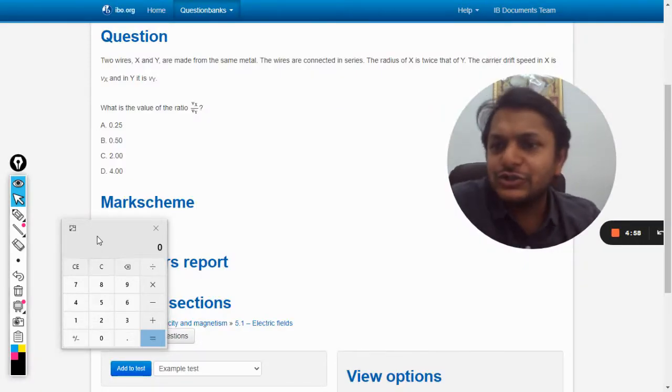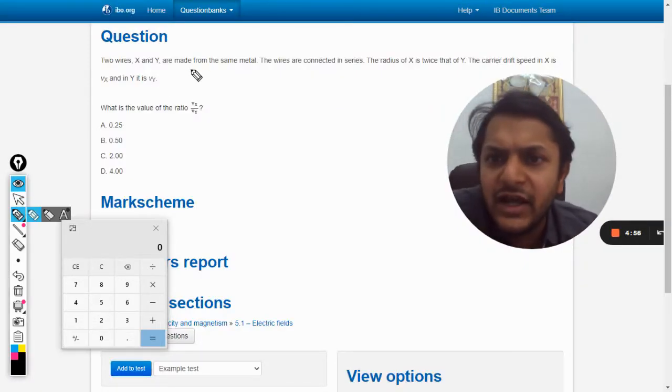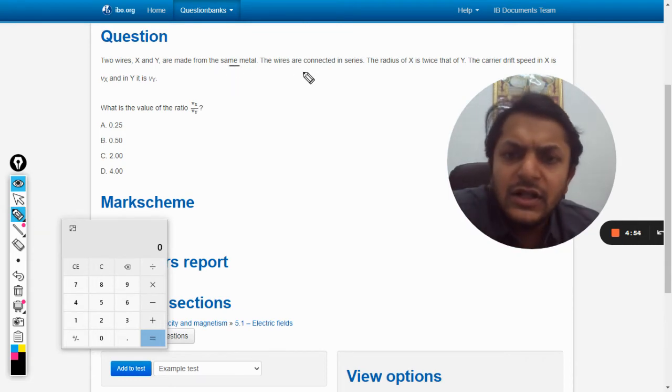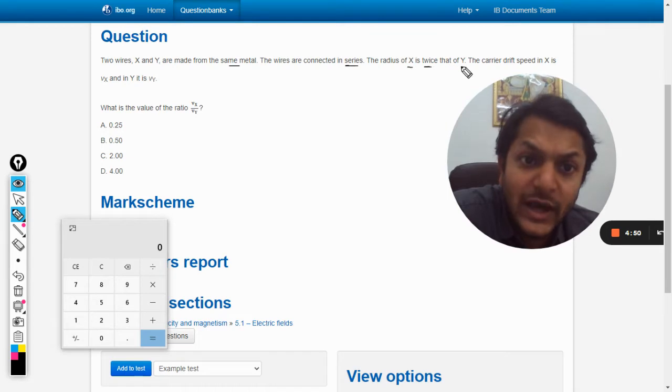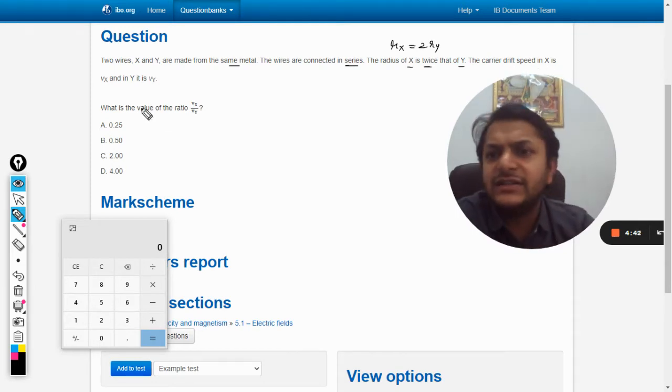Okay students, in this question two wires X and Y are made from the same metal. The wires are connected in series. The radius of X is twice that of Y. The carrier drift speed in X is vx and in Y is vy, so you need to find the ratio of vx by vy.